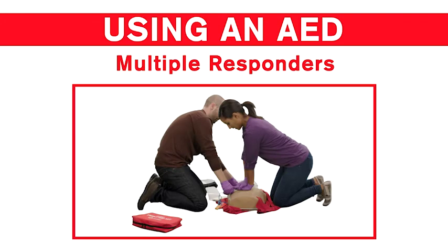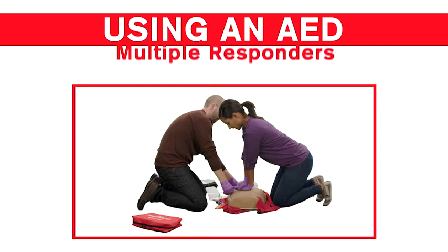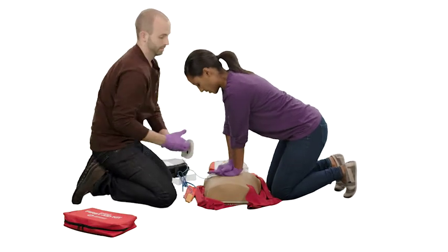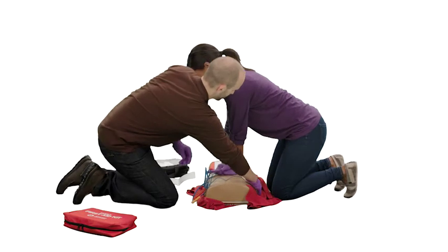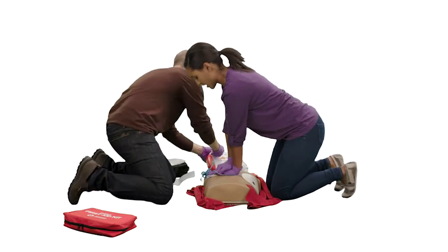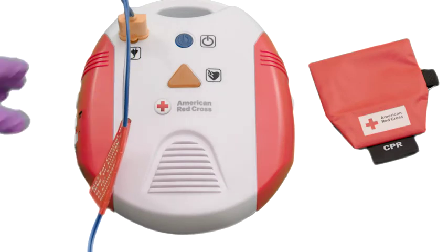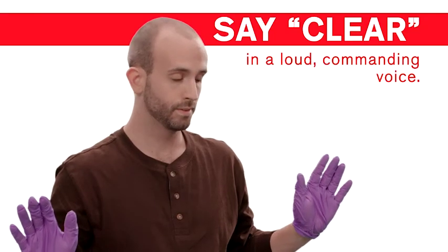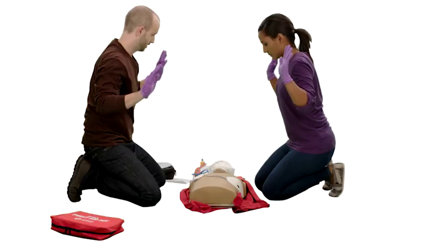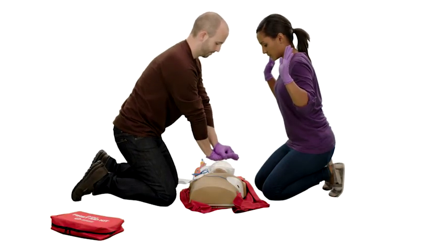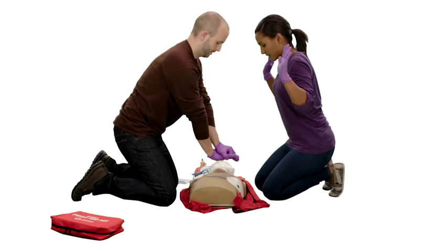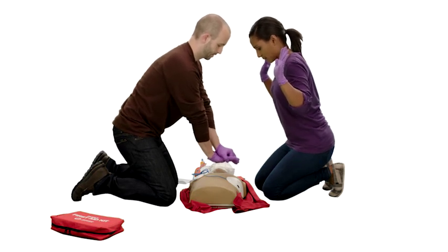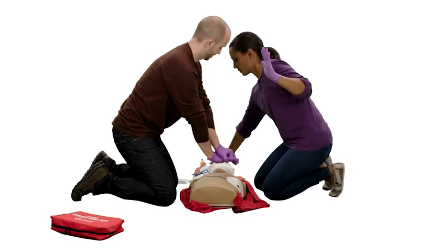If there are two or more responders, the steps will be slightly different. Responder 1 will continue CPR while Responder 2 sets up the AED. When the AED prompts analyzing heart rhythm, Responder 2 says clear, and the responders switch roles. Responder 1 will now operate the AED, and Responder 2 will now provide CPR. The responders should switch roles in this manner each time the AED analyzes the heart rhythm.